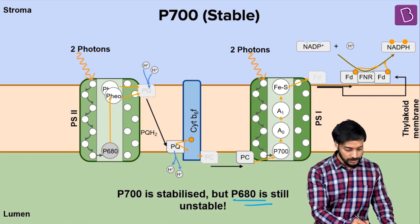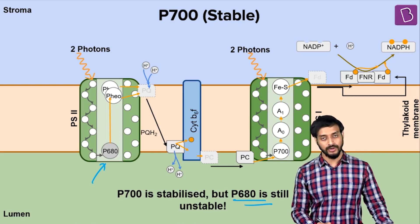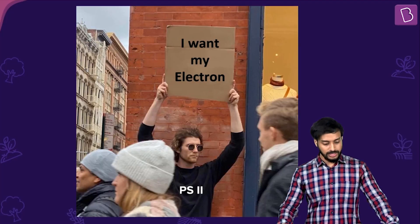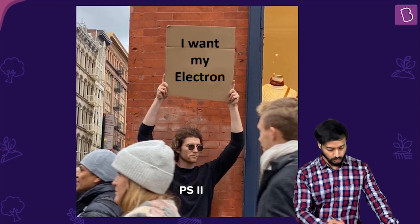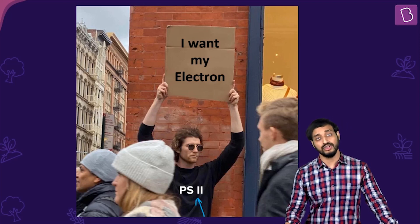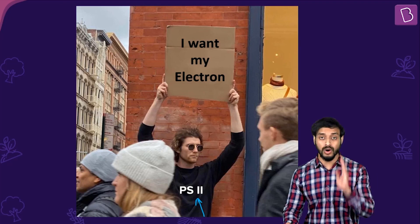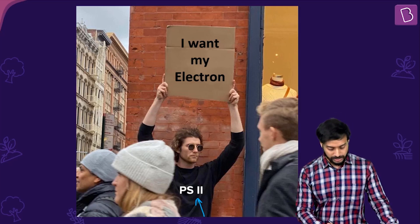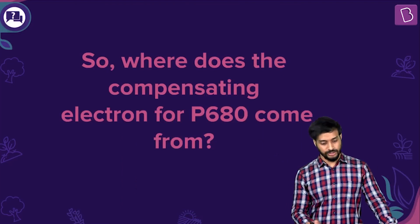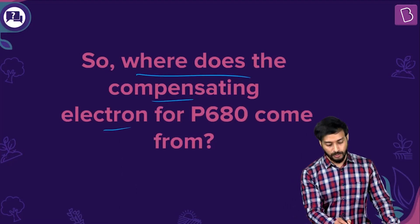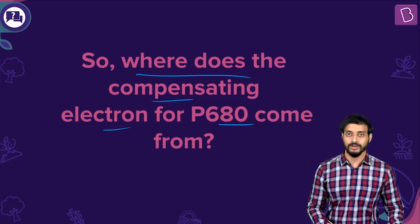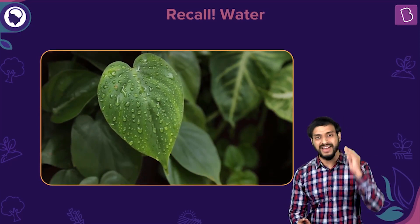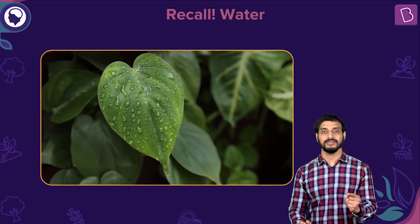P680 wants its electron back. We have solved PS1's problem — P700 is stabilized — but now we must solve PS2's problem. The question is: where does the compensating electron for P680 come from? Here comes water, which plays a very important role in replenishing this electron.